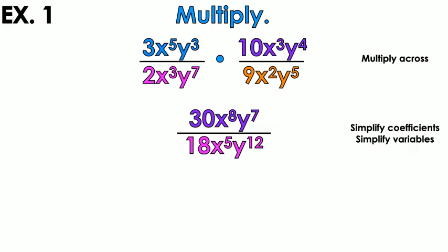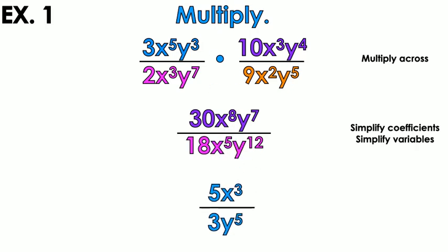Now we simplify the coefficients and variables. 30 and 18 both have a GCF of 6. So 30 divided by 6 over 18 divided by 6 gives me 5 over 3. Then x to the 8th over x to the 5th: 8 minus 5 gives me x to the 3rd. And y to the 7th over y to the 12th: 7 minus 12 is negative 5, so I bring it to the bottom as y to the 5th.